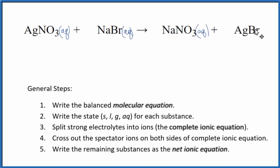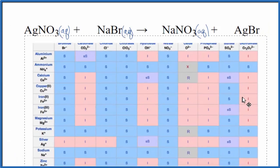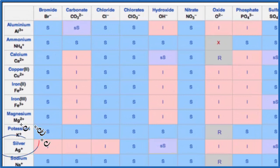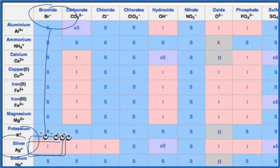But for the silver bromide, let's look that up on a solubility chart. Silver compounds often are insoluble. So here's the chart, and we find silver right here, and here's the bromide. We go down, and there's that I, insoluble.